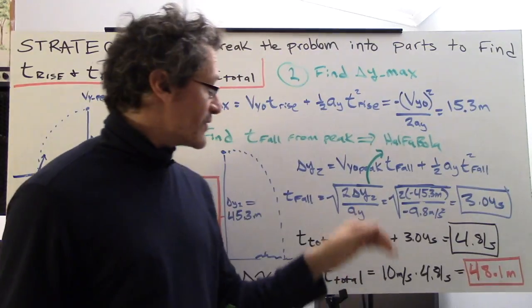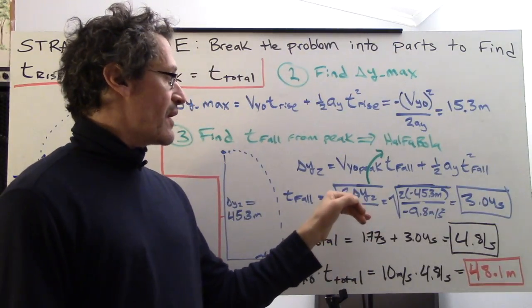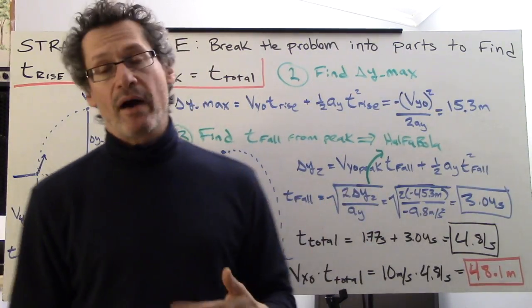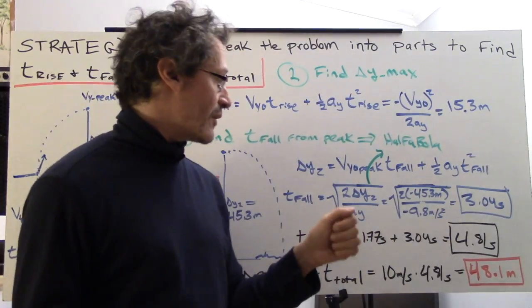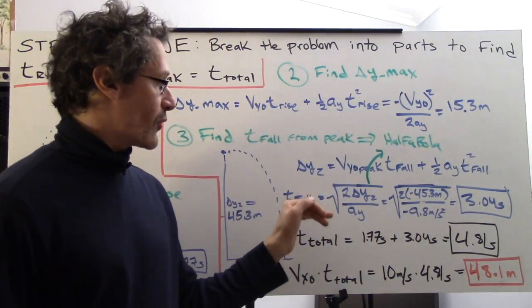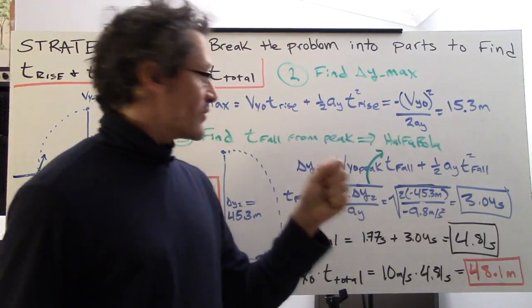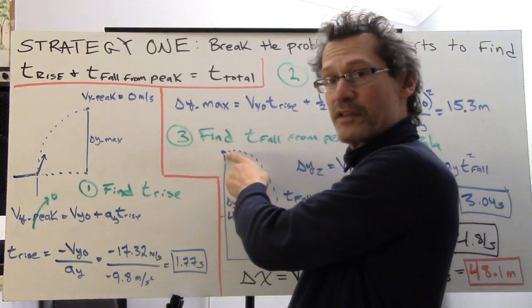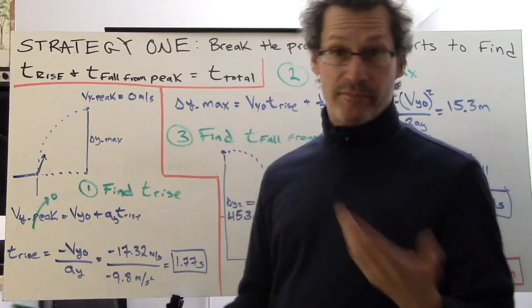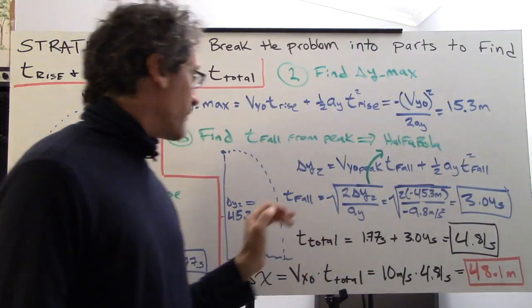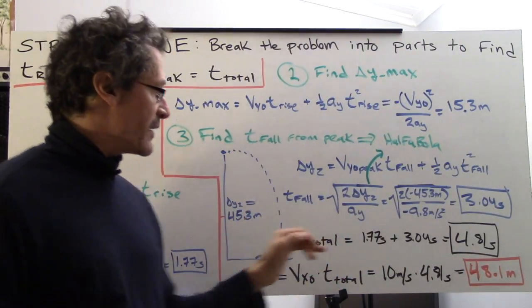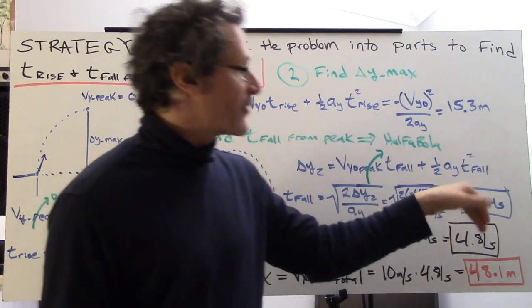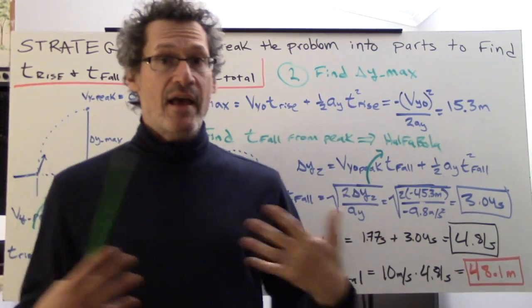You're probably recognizing some patterns. You're seeing this whole expression: the square root of two delta y over a y. That's something you've probably seen a number of times in making this type of calculation for falling from rest. Essentially, this is falling from rest from this moment here at its peak to the water, not the ground, 45.3 meters below.